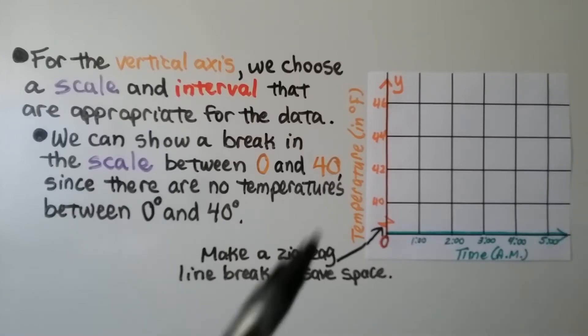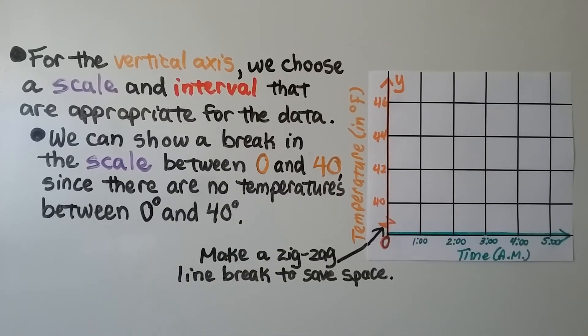For the vertical axis right here, we choose a scale and interval that are appropriate for the data. We show a break in the scale, right here, between 0 and 40, since there are no temperatures between 0 and 40.